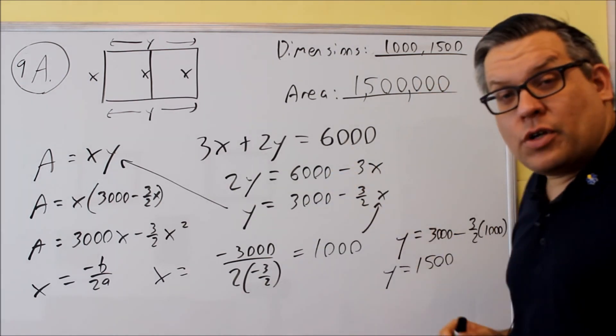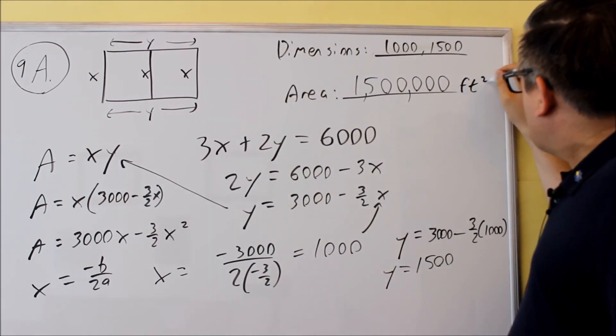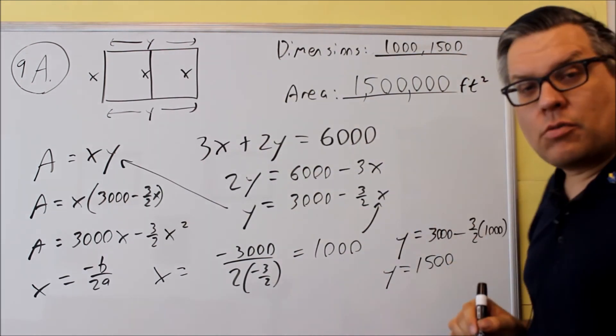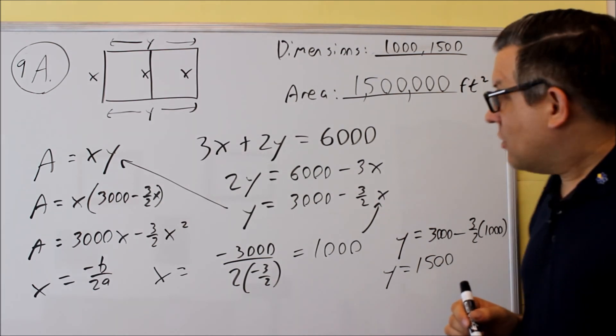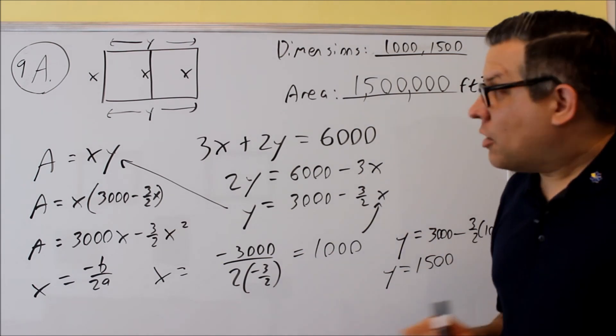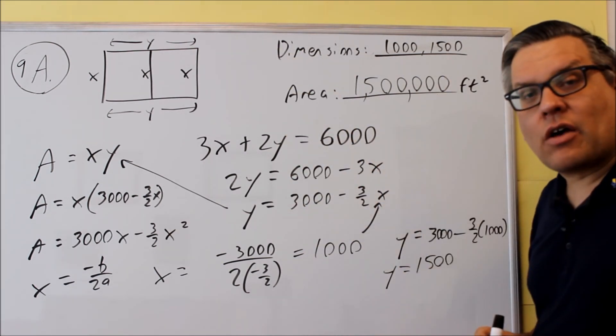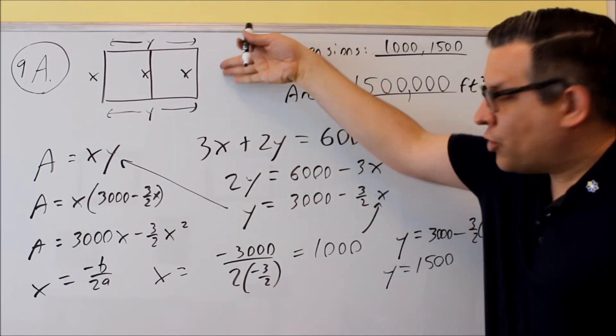The units on that would be, all these were in terms of feet, which means that this would be square feet. And of course each of these are going to be in terms of feet. And so we get 1.5 million square feet. That's how much would be the maximum area that can be enclosed if we have 6,000 feet of fencing put into that shape.